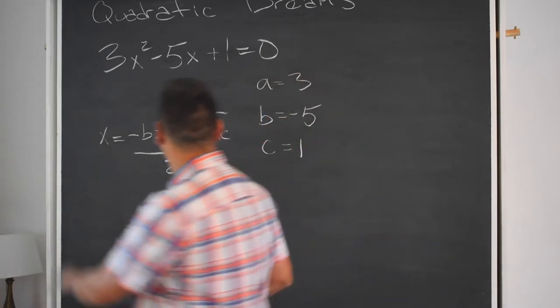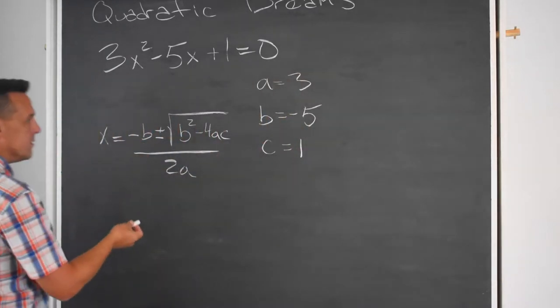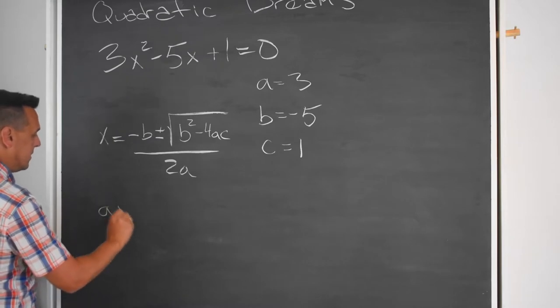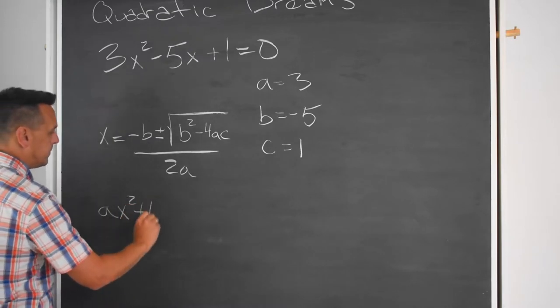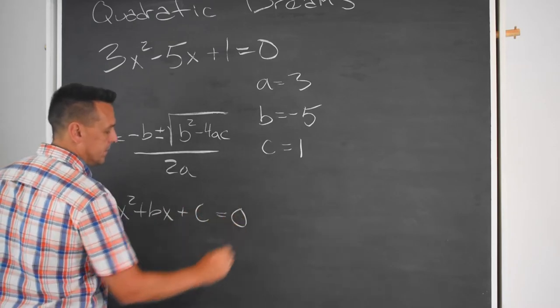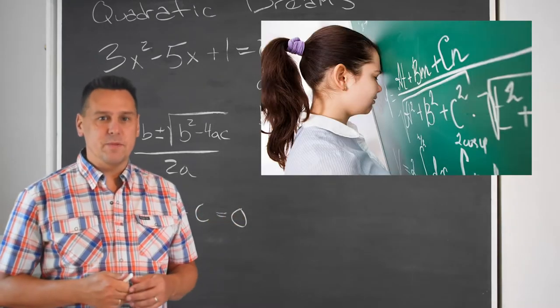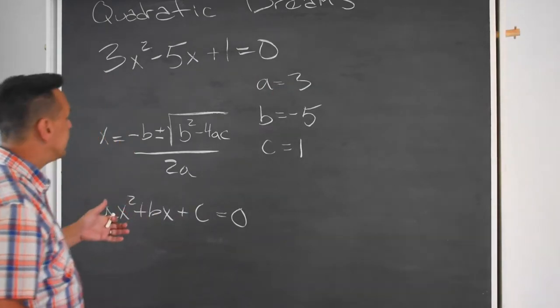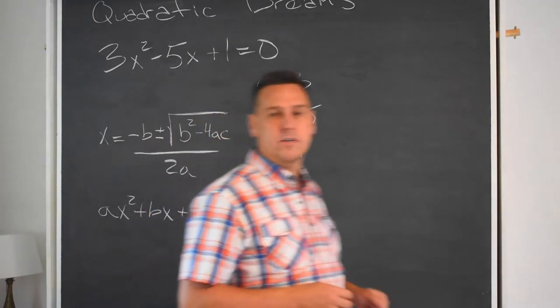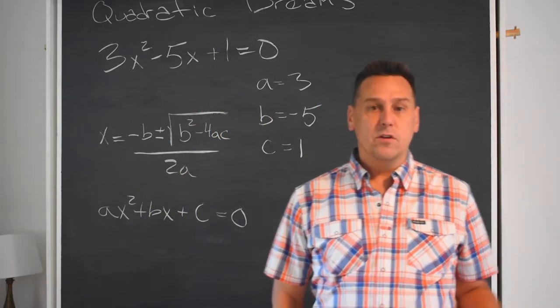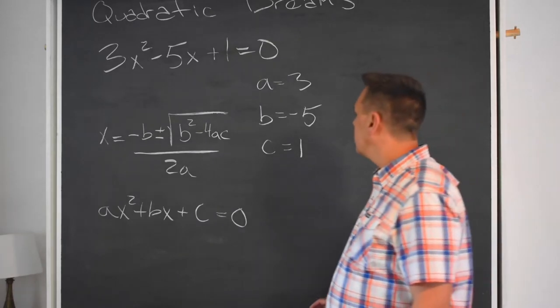What allows us to do this is that this quadratic formula goes along with the standard form of the quadratic equation: Ax squared plus Bx plus C equals 0. A lot of times in a class, for a test or something, you'll be given a quadratic equation and you have to get it into this form in order to solve it.